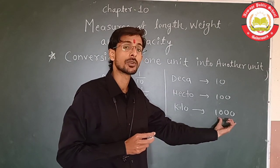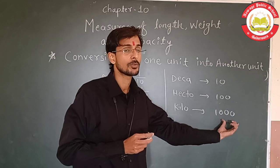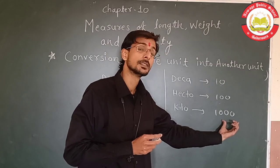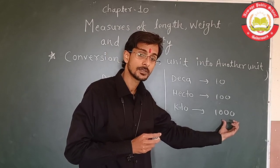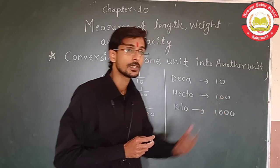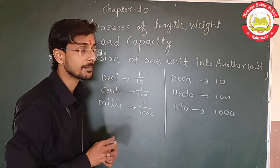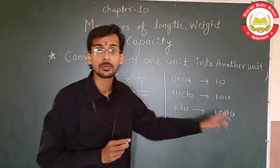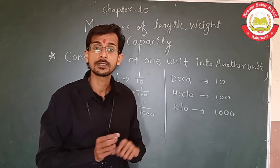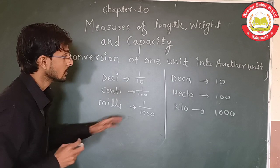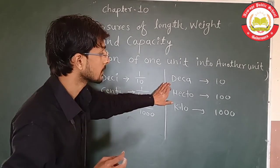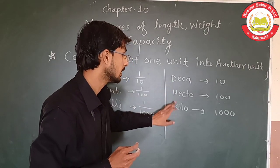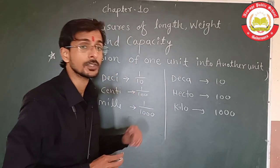When we go to a lower unit, we multiply by 1000. So when we convert kg to a lower unit, we multiply by 1000. Deca means 10, hecto means 100, and kilo means 1000.